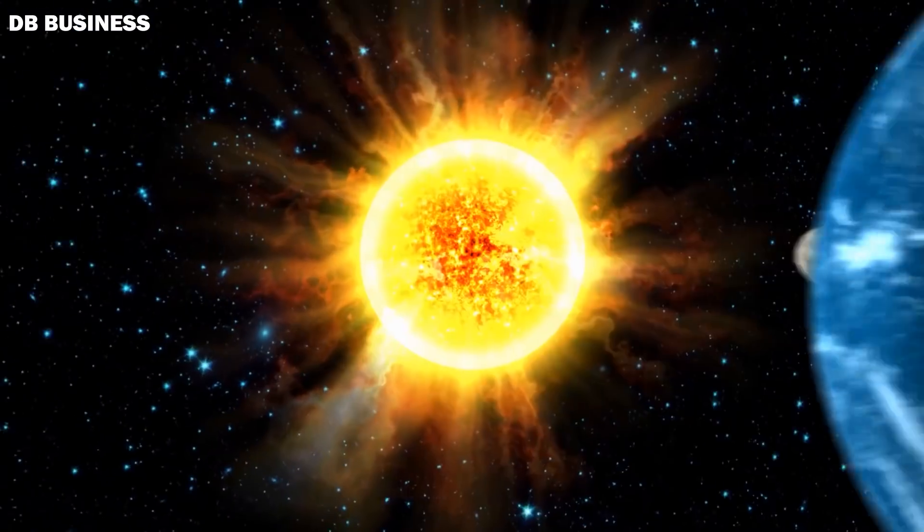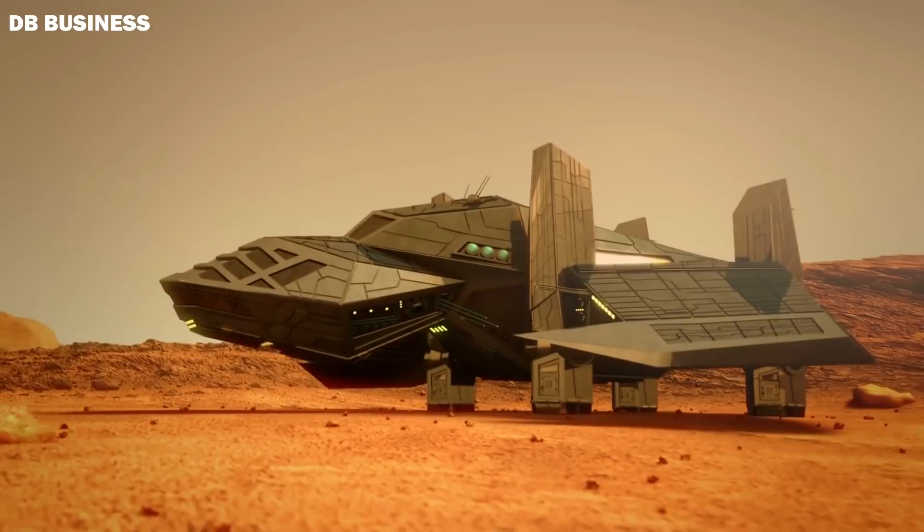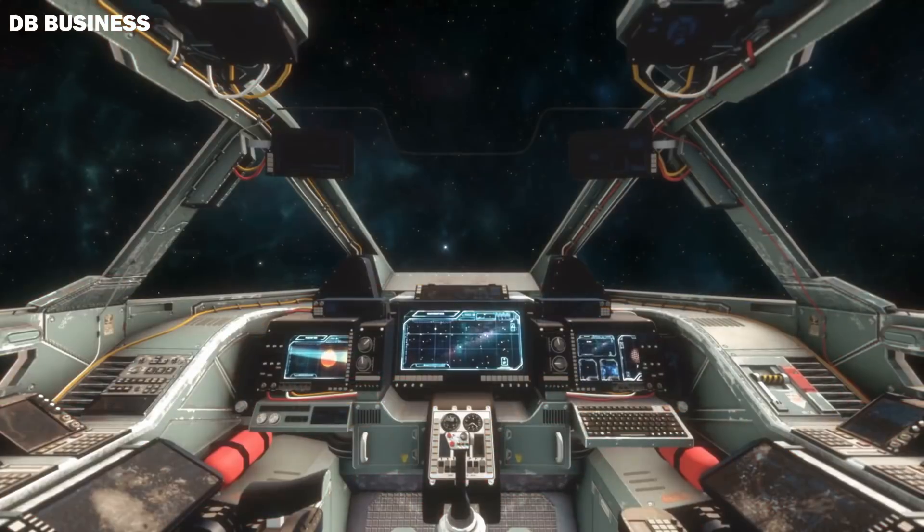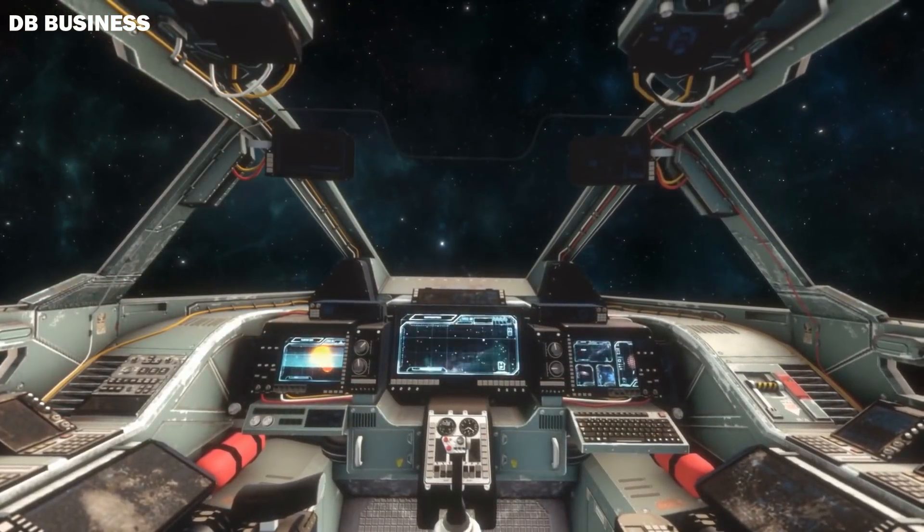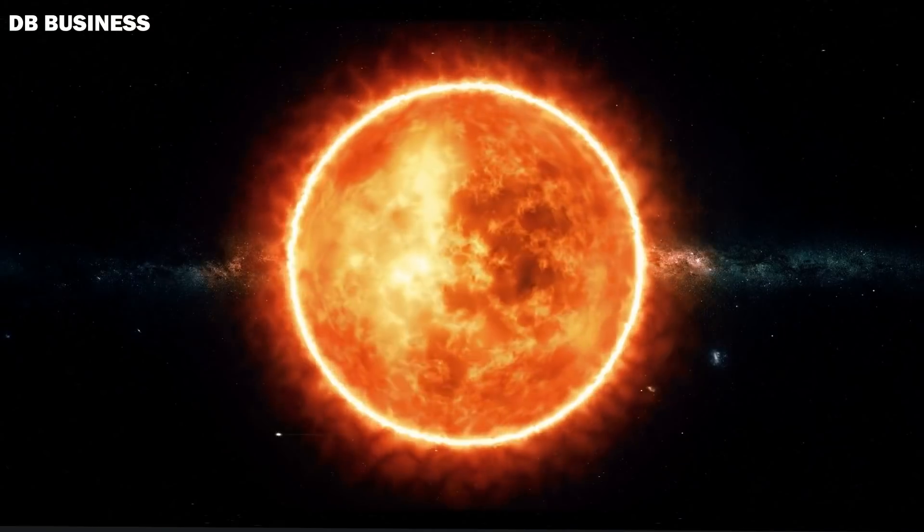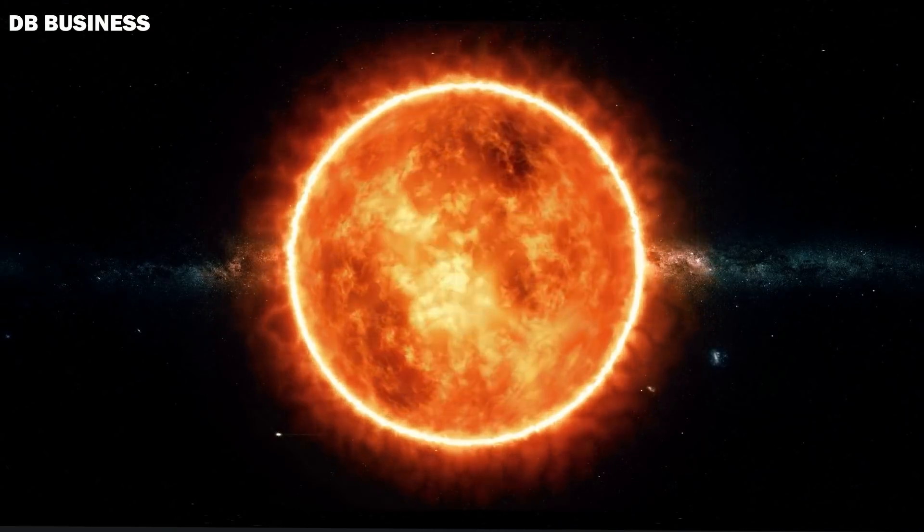Though Venus is our closest interstellar neighbor, it doesn't look like a likely future home for space travelers. While we would have a quick commute, 97 days to Mars, two years, we would likely melt under the heat or the harsh acidic rains.